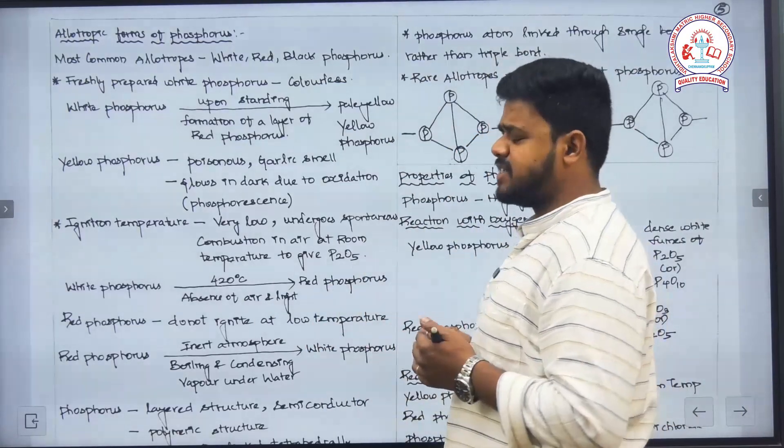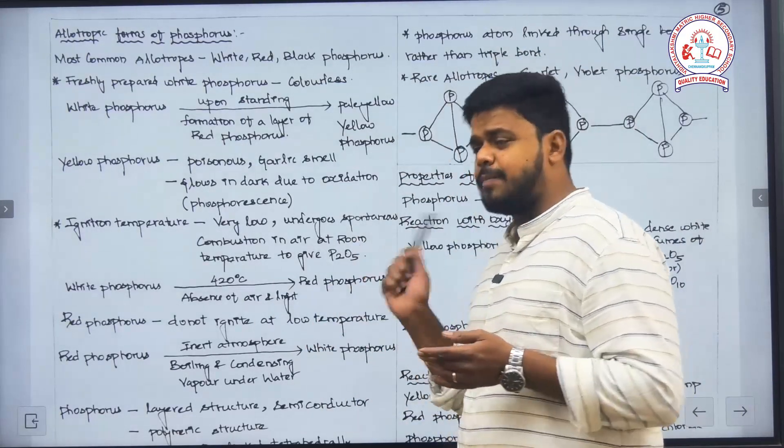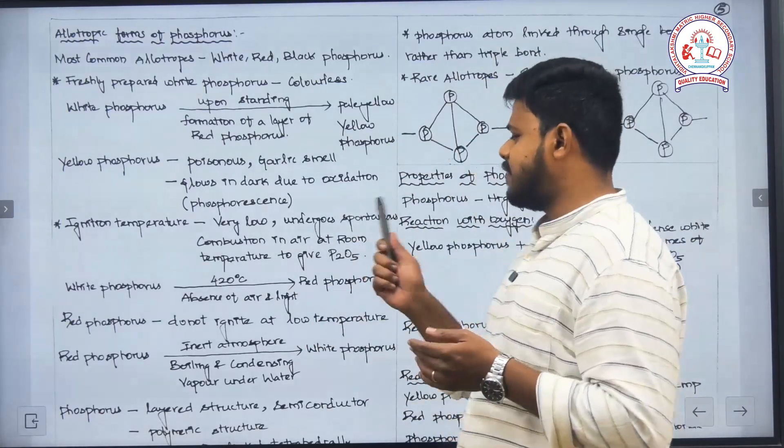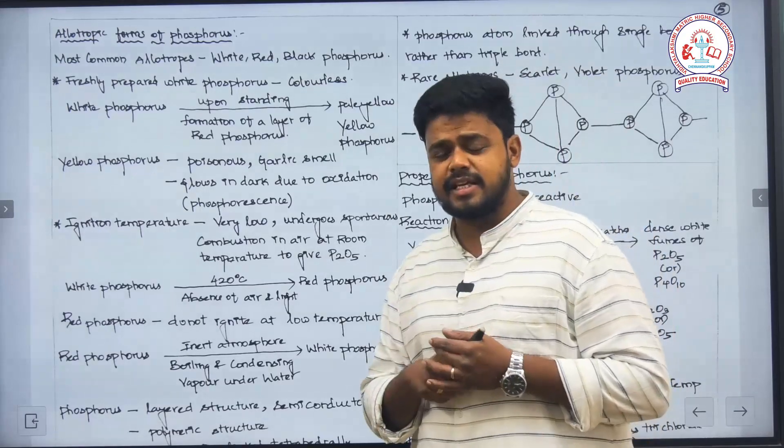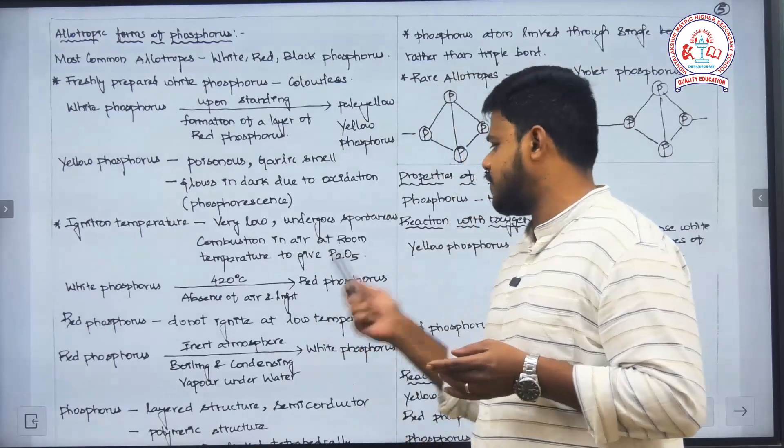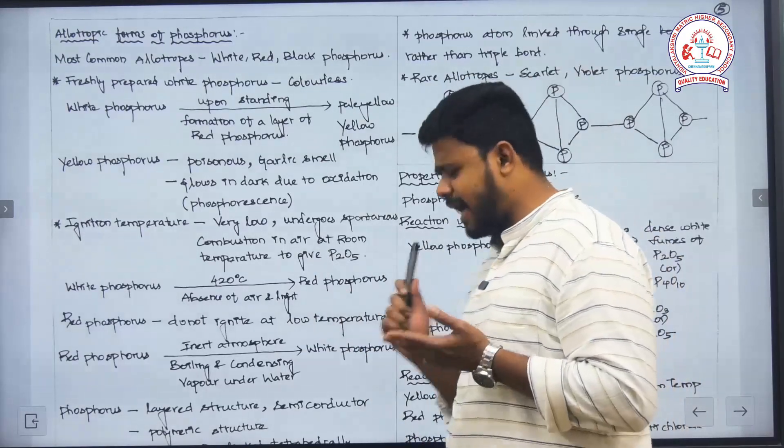This white phosphorus is converted into red phosphorus by heating at 420 degrees Celsius in the absence of light and air.